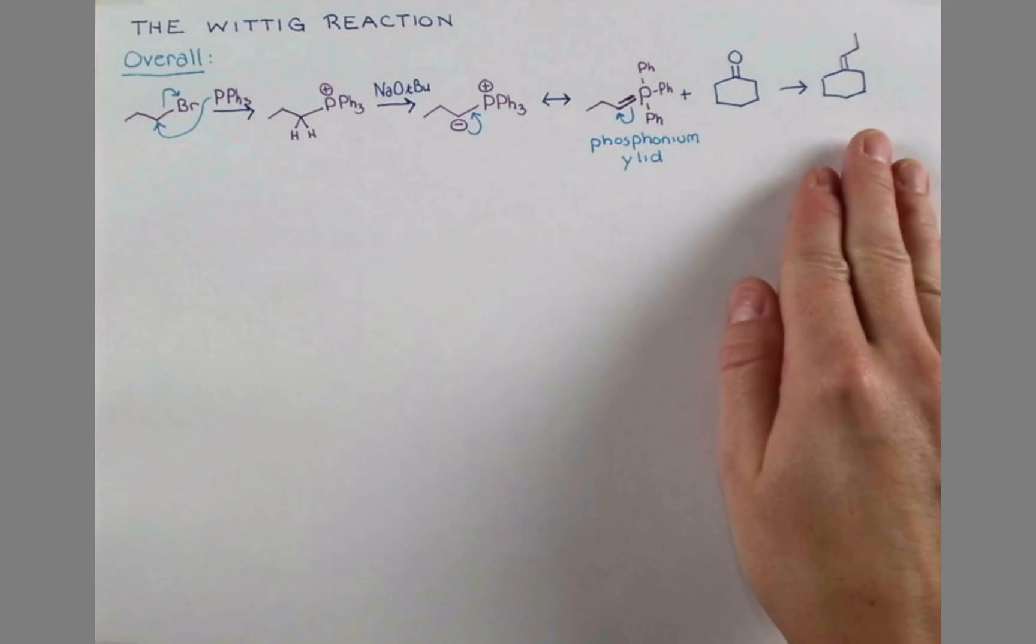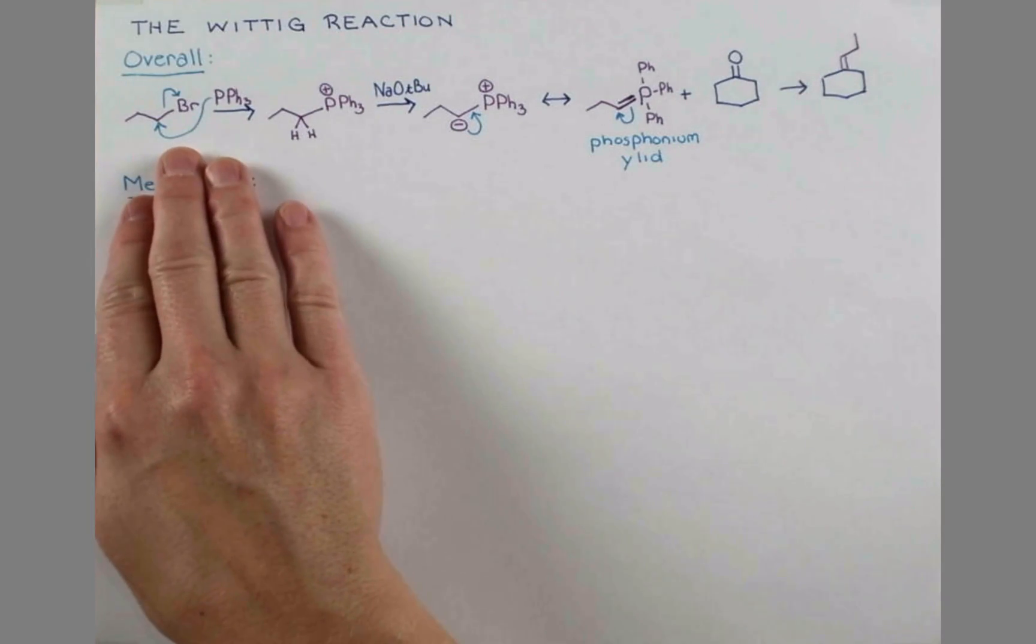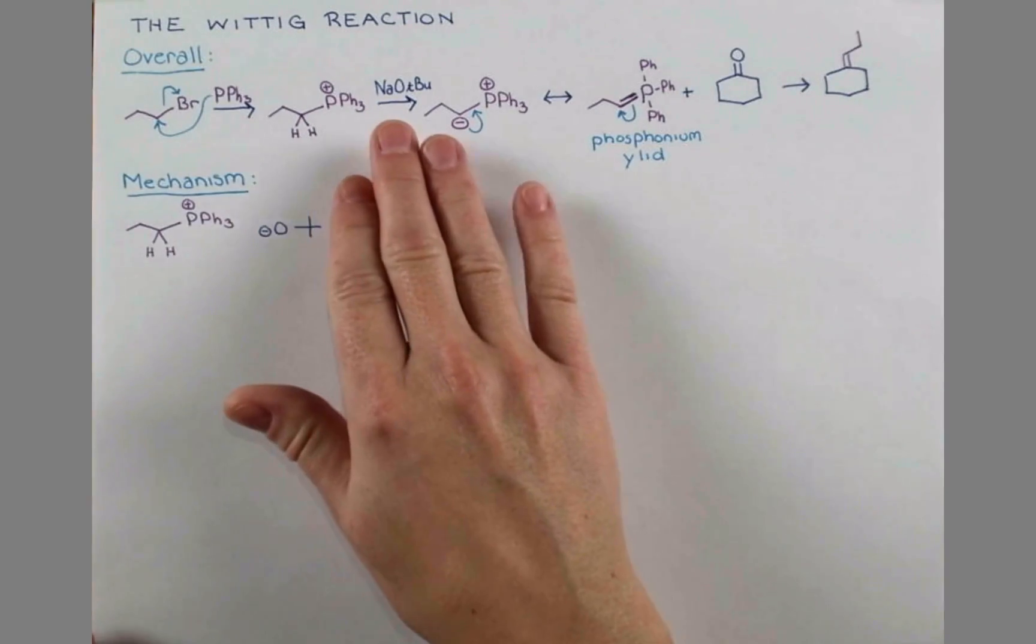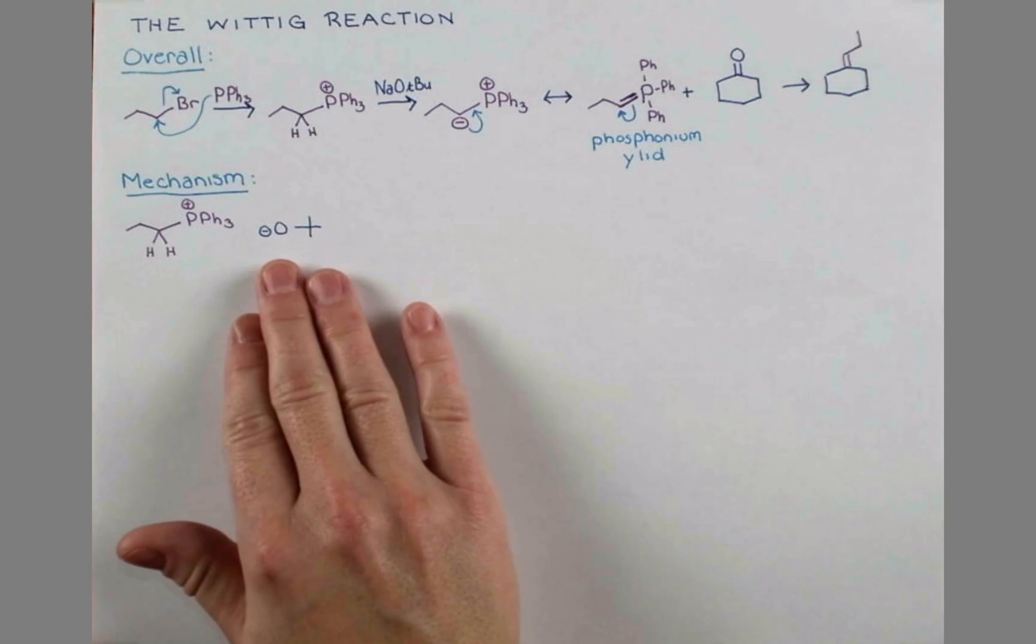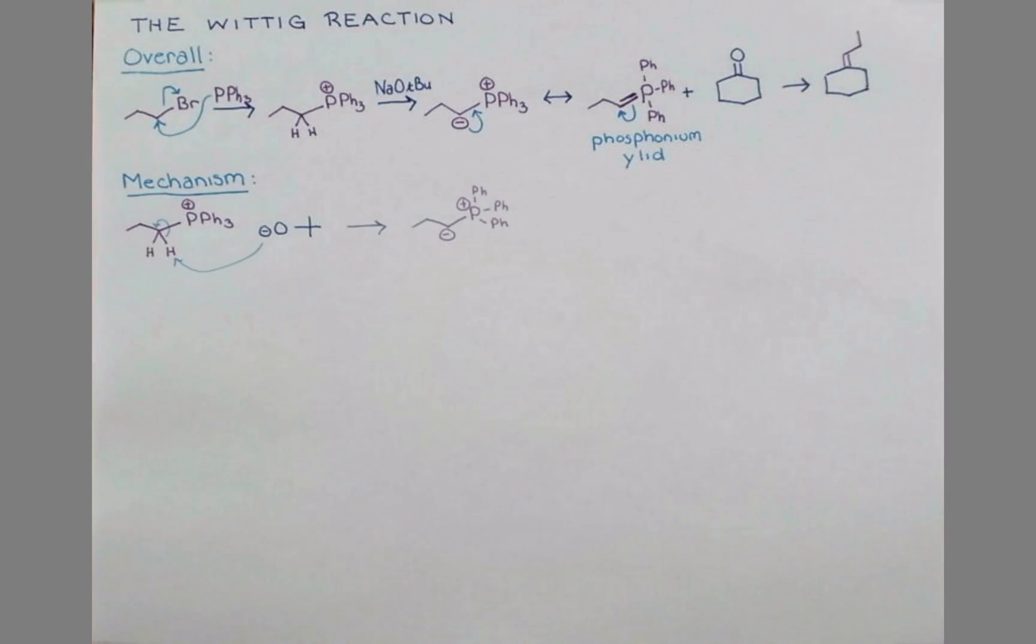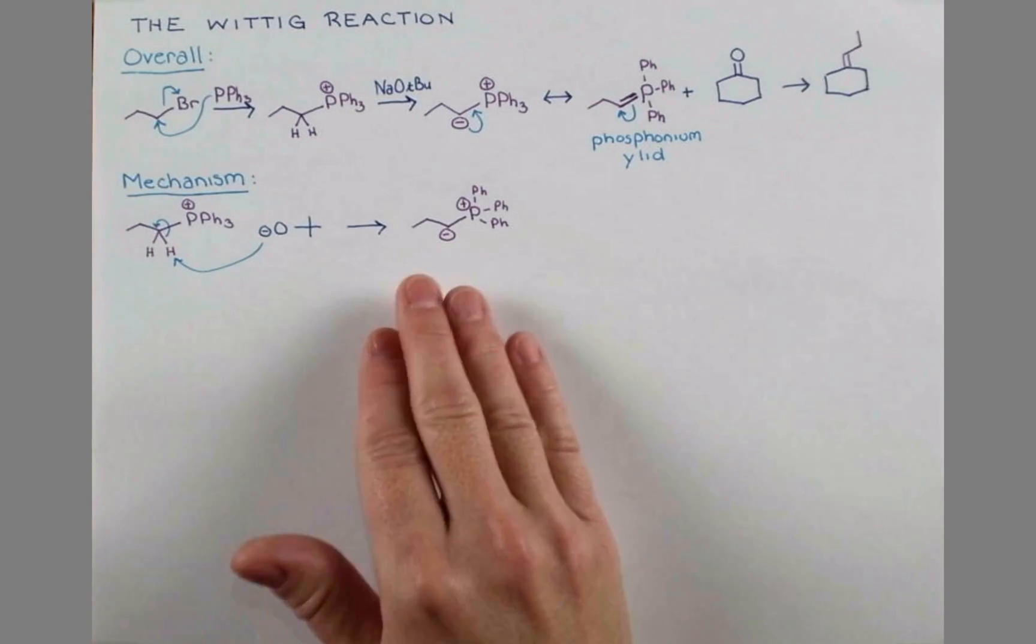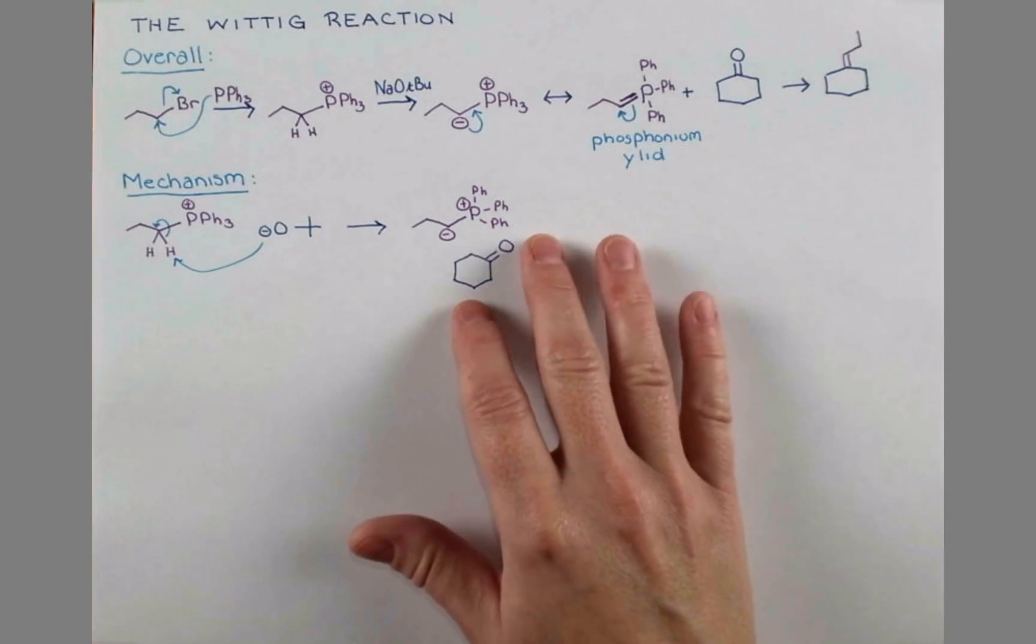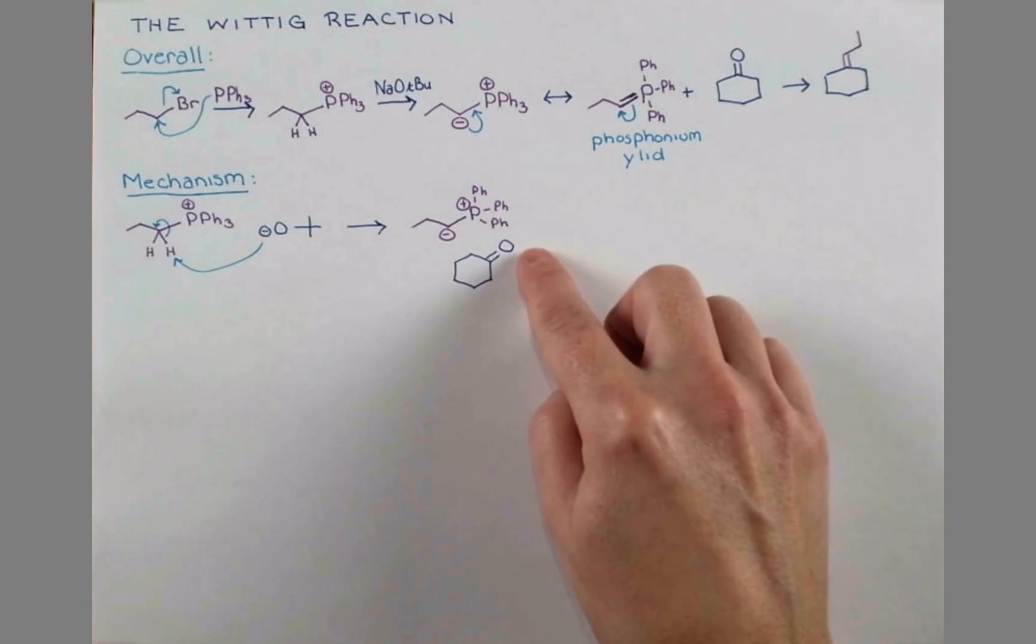This reacts with carbonyl compounds producing alkenes. Since we've already shown the arrow pushing for this SN2 reaction, let's start here. Sodium can be regarded as a spectator ion, so we only need to show the tert-butoxide portion to show the deprotonation of this acidic proton. Now I'm going to leave the ylid in this charge-separated form to show you the rationale for why it attacks the carbonyl the way it does. We'll align this so that the oxygen and phosphorus are close to each other, lined up in this way.